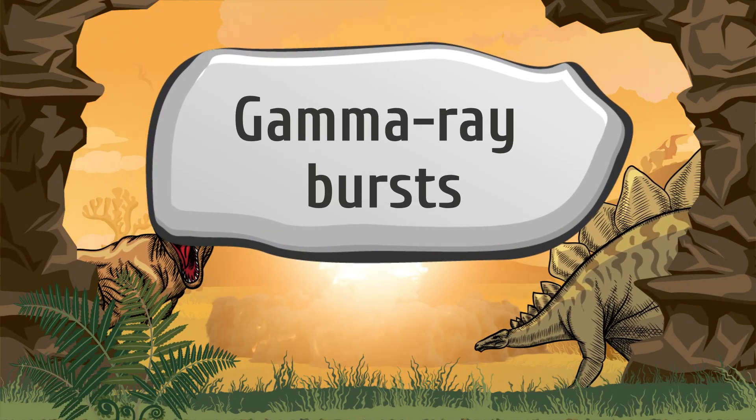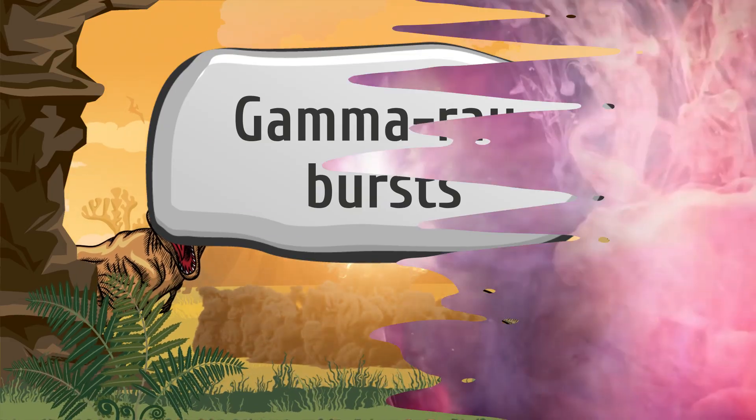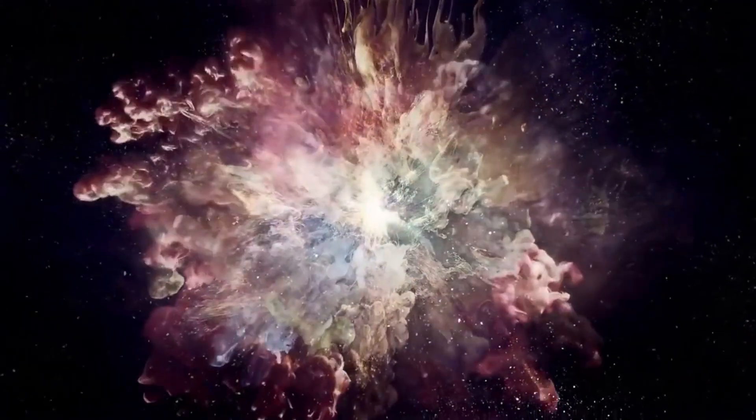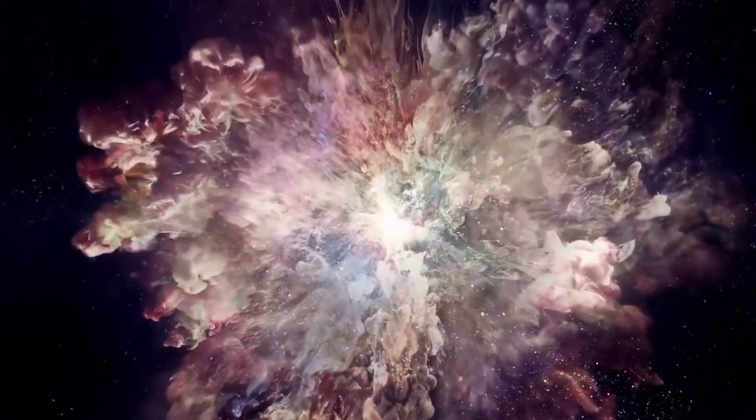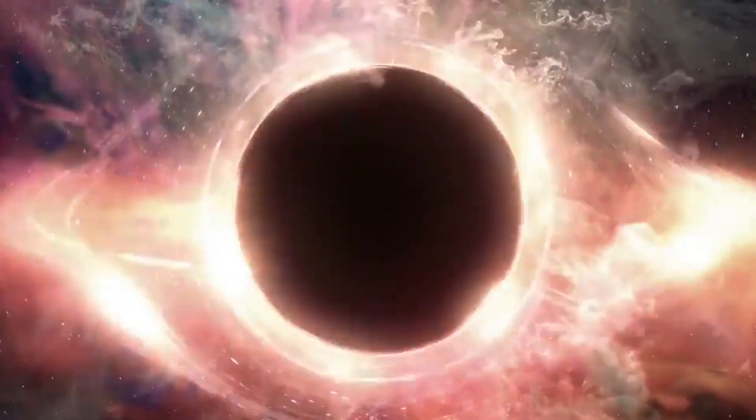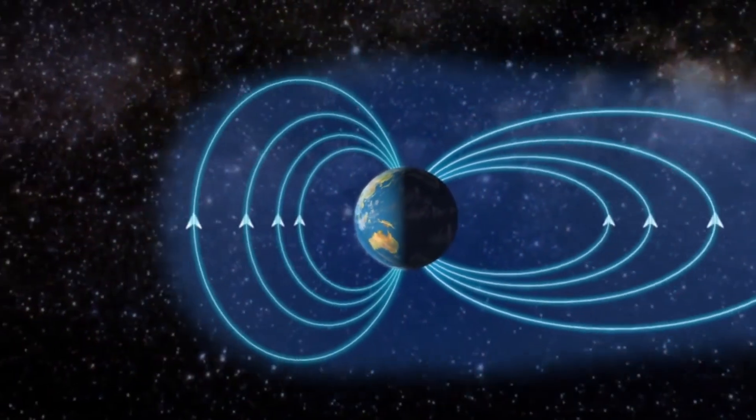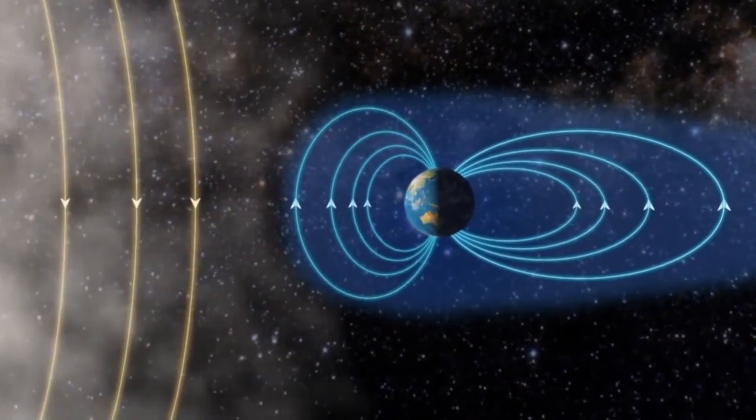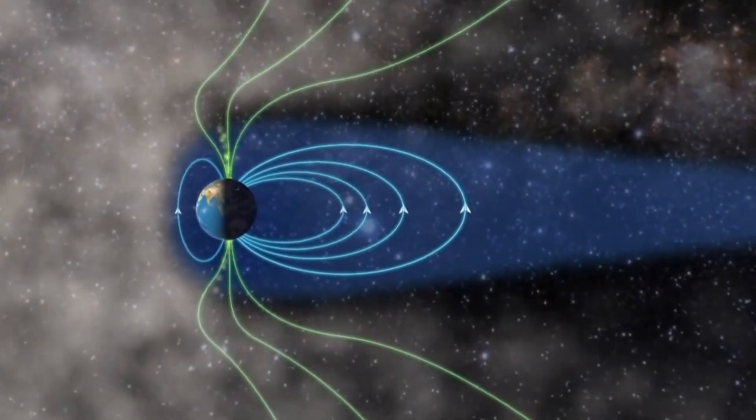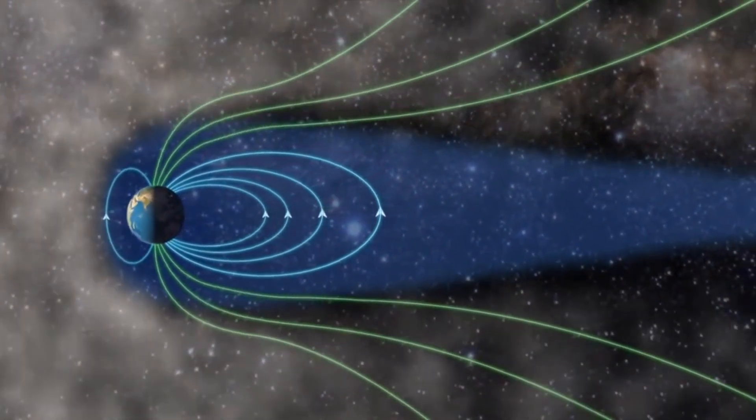Gamma ray bursts. These bursts are the result of fierce space explosions that happen when two stars collide or a giant star blows up. They can last anywhere from a fraction of a second to a couple of minutes. If the Earth is within the vicinity of a gamma ray burst, it could obliterate our ozone layer, which, as we've already mentioned, will lead to the end of everything on the planet.